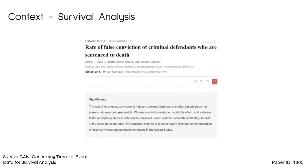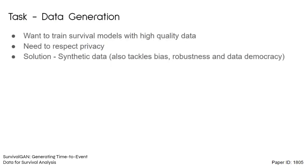Survival analysis is highly impactful. This paper showed that when studying defendants in the US who are sentenced to death, if they were to remain under sentence, at least 4.1% would have been exonerated. Given these models' impact, we want to train them with the highest quality data we can get, but we also need to respect privacy. One solution is using synthetic data, where we create fake data that mirrors the statistical properties of the real data without any real subjects being in the data. This can also tackle bias, robustness, and data democracy.